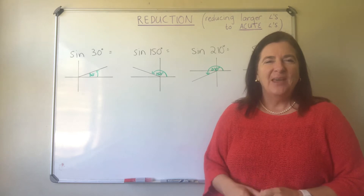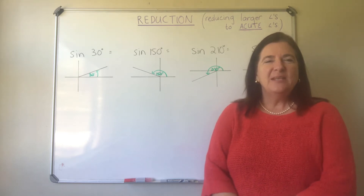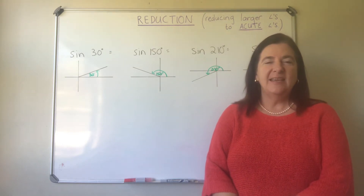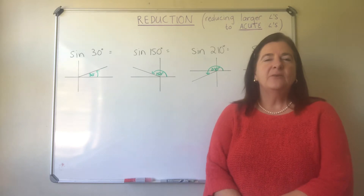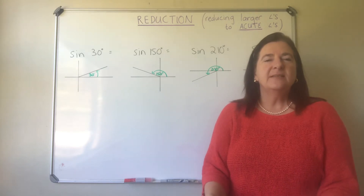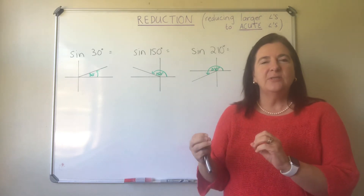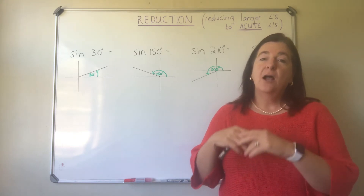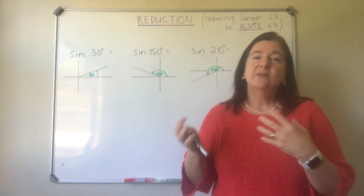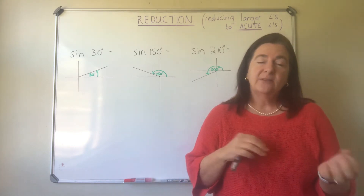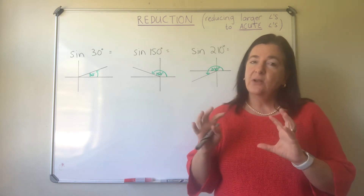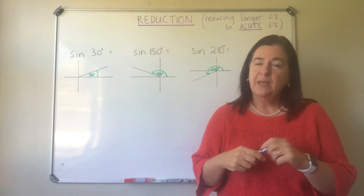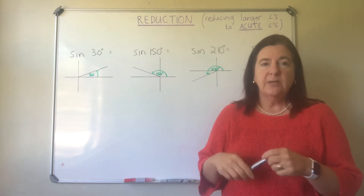Good morning everybody. We're going to do a reduction in trig today. Reduction means exactly what the word says — it's reducing. What we're reducing is larger angles to smaller angles, to acute angles. So whatever the size of the large angle, we're reducing it into an acute angle.